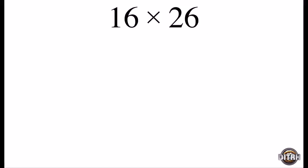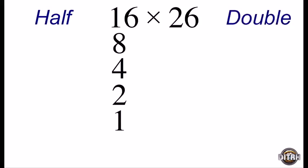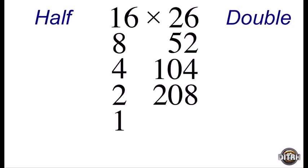Let's do another example to see how this method works. Let's say you wanted to do 16 times 26. The first step is to divide the number on the left in half repeatedly. So dividing 16 in half, we get 8, and then 4, 2, and finally 1. We take the number on the right and we repeatedly double it. So from 26, we get 52, 104, 208, and 416.